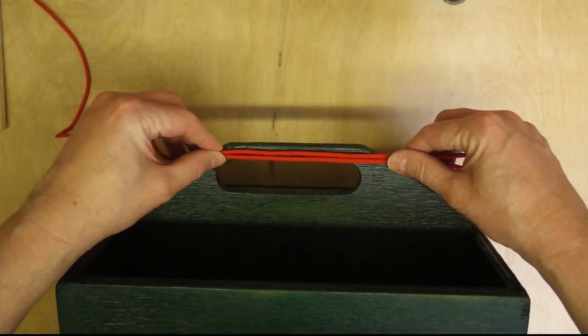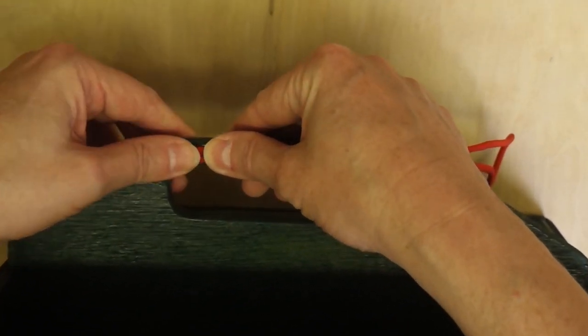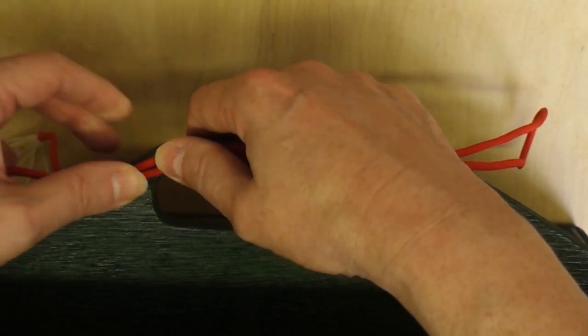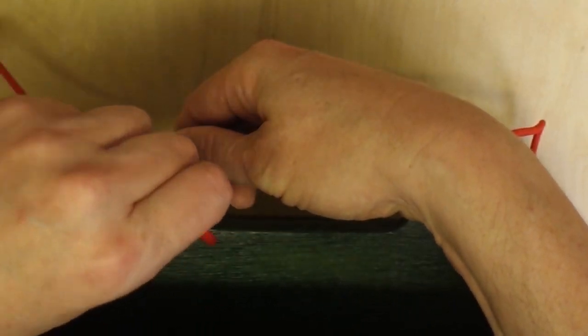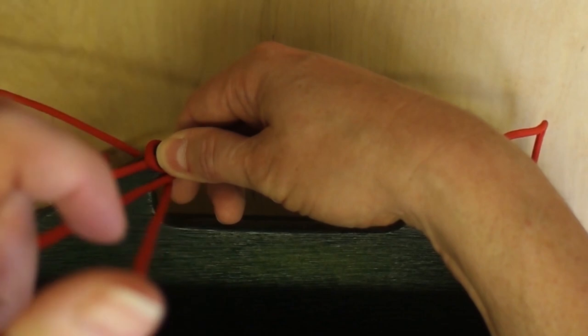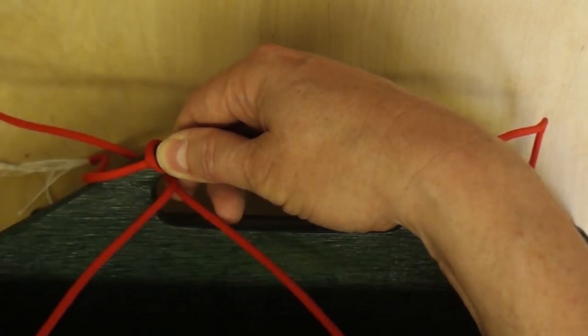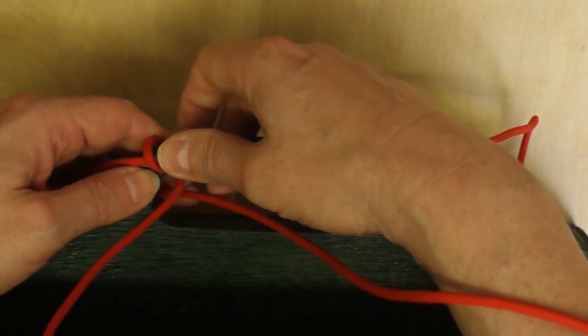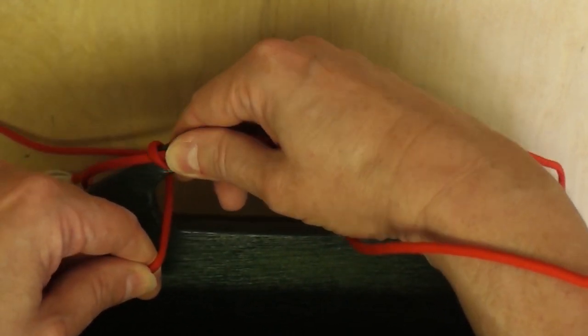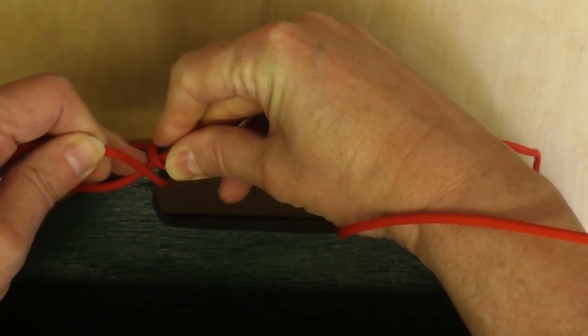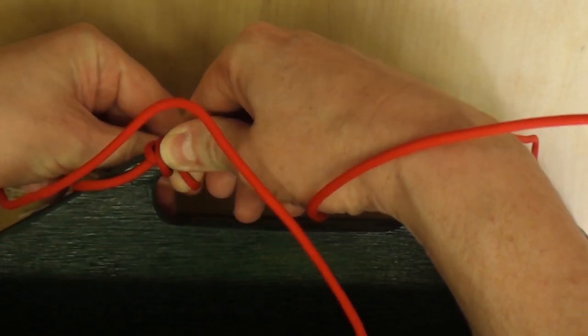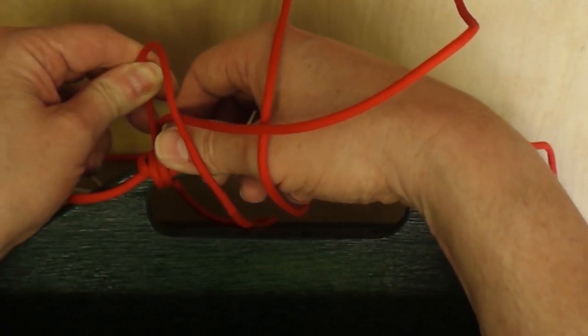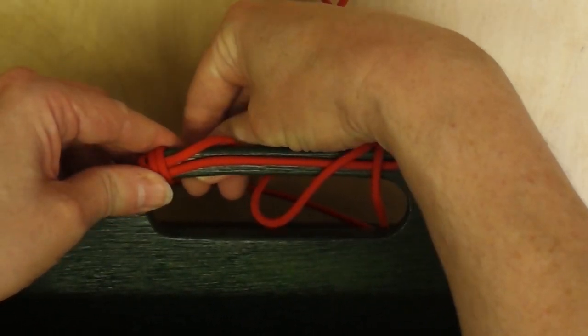And now what we need to do is hold this in place, go over the top, let's get a bit nearer the end, let's go from here and then go through like that. And this is where it's going to get fun because now I've got to pull the whole lot through, which I think it's going to be because I started knotting up again already. Pull it tight.